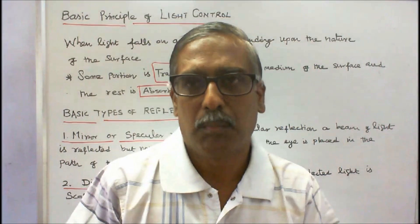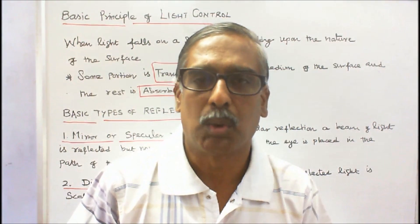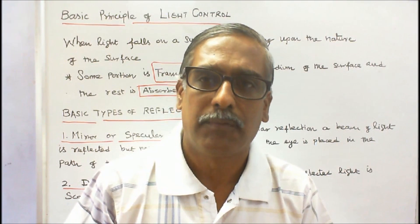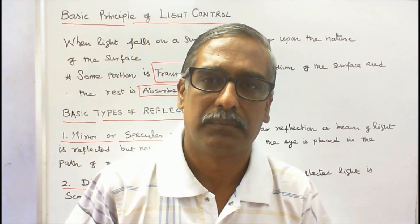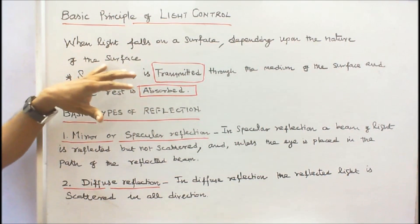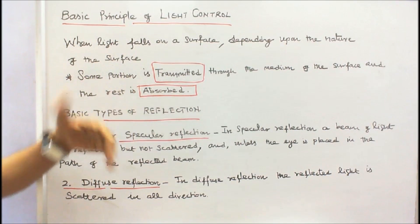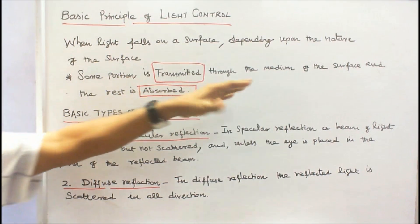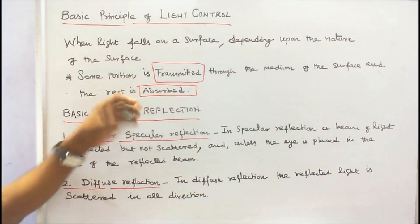This class we discuss the basic principle of light control and types of lighting schemes. When light falls on a surface, depending upon the nature of the surface, some portion is transmitted through the medium of the surface and the rest is absorbed.